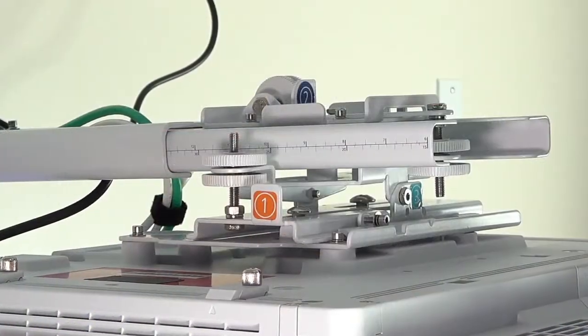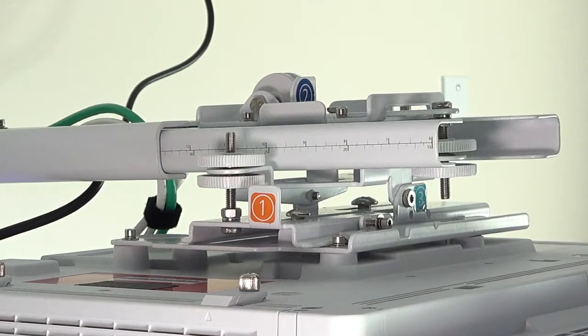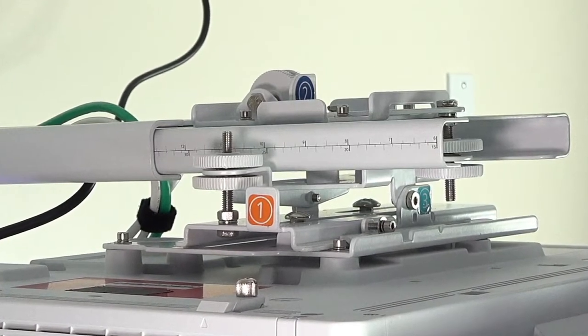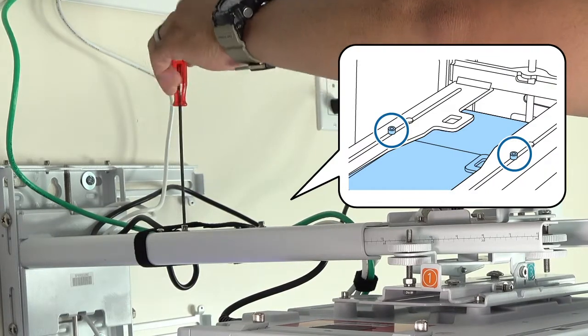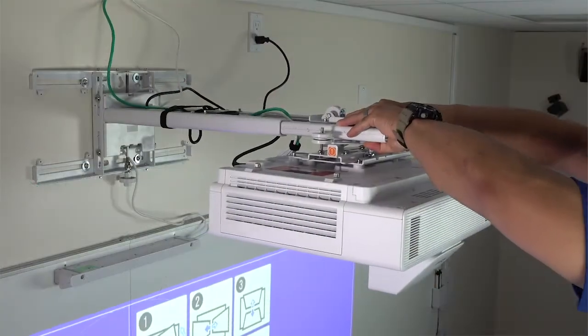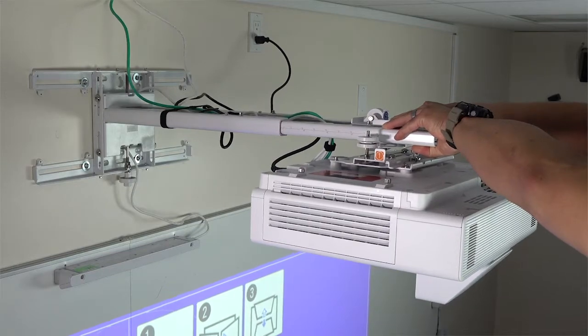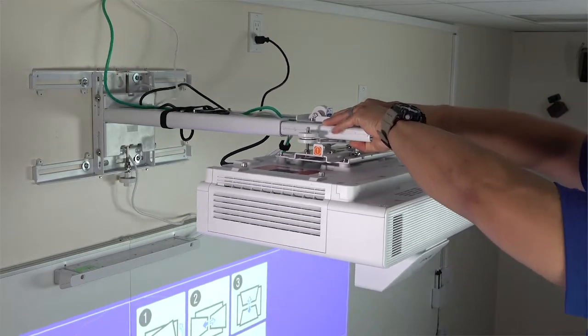On the mount arm, there are markings you can use to set the length of the arm to achieve the desired image size. Loosen these screws and extend the mount arm for a larger image, or shorten it to reduce the image size.